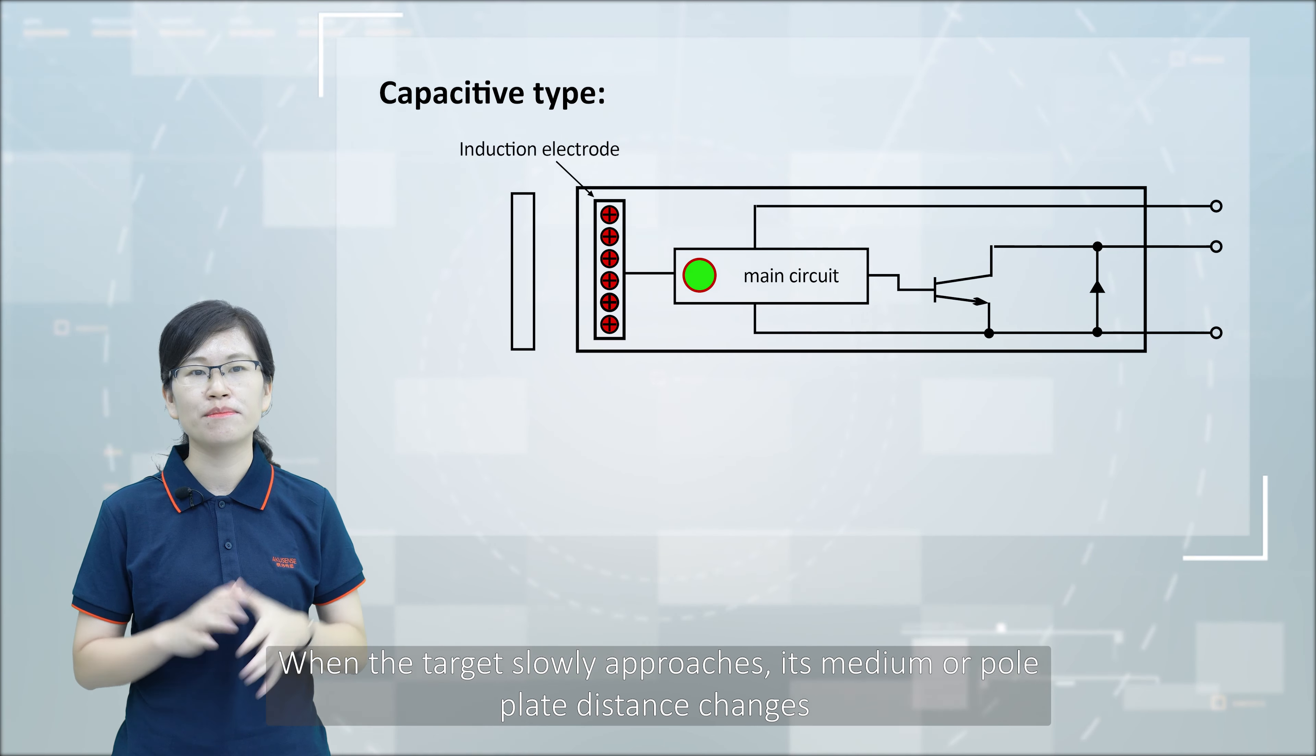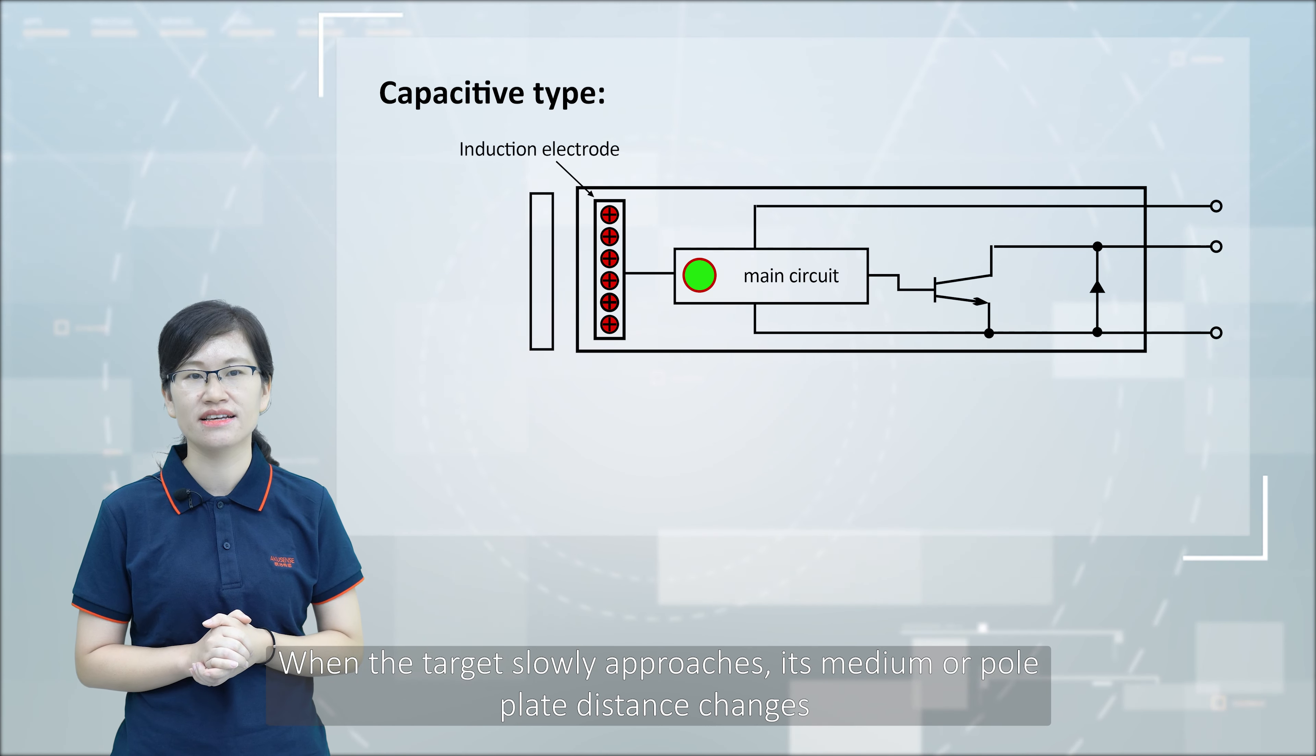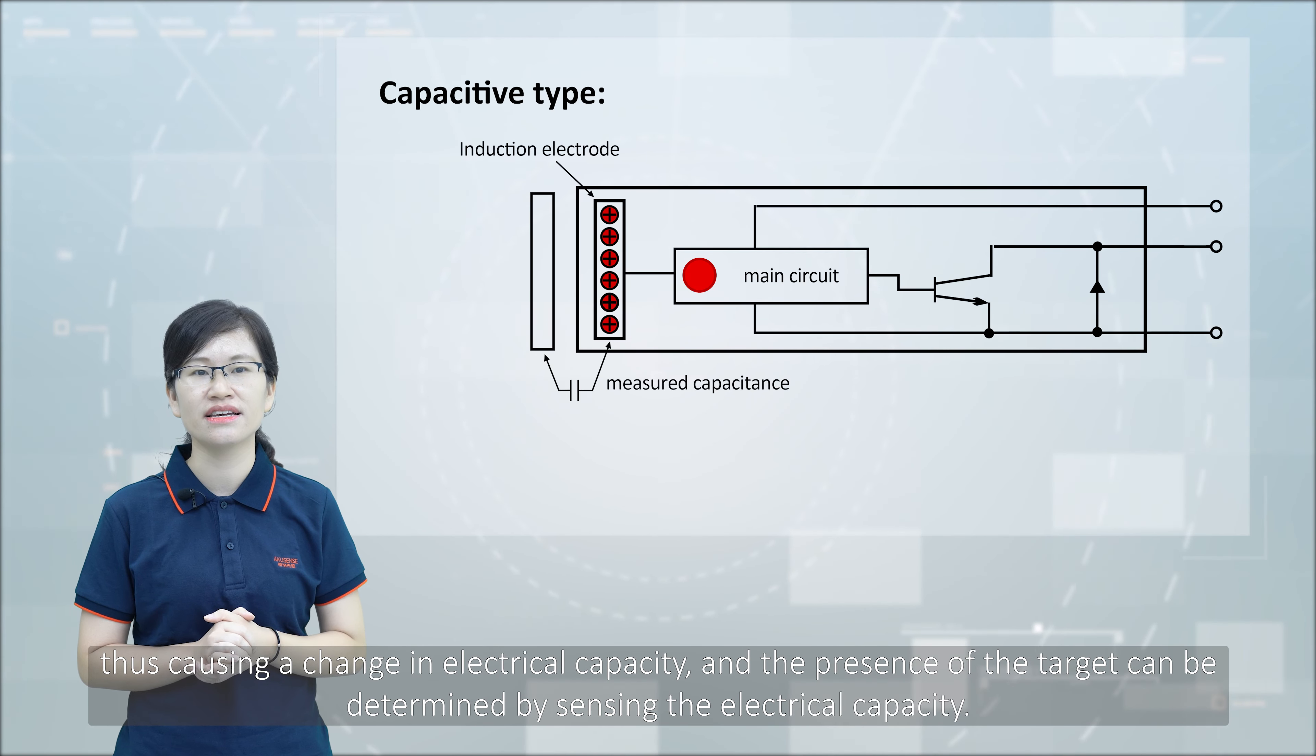This causes a change in electric capacity, and the presence of the target can be determined by sensing the electric capacity.